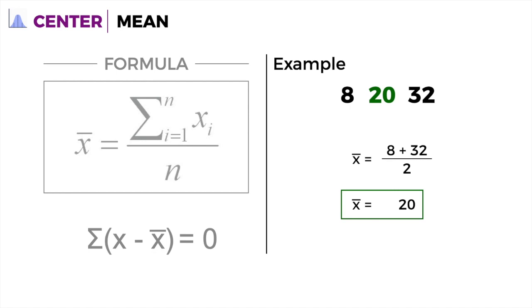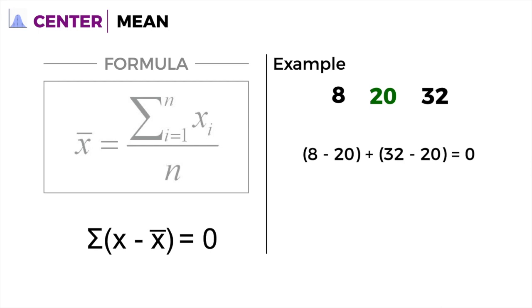Remember, 20 here is the mean. Now we want to find out if it is indeed the balancing point for the whole distribution. We want to verify that if you subtract the mean from the different values and add up all the differences, we get 0.